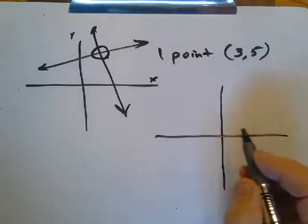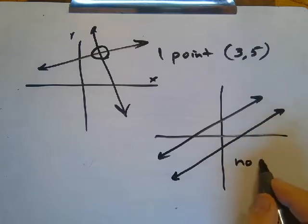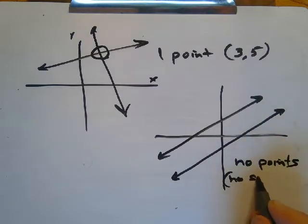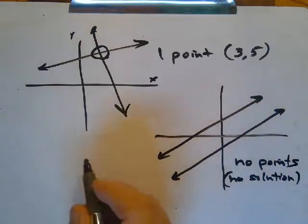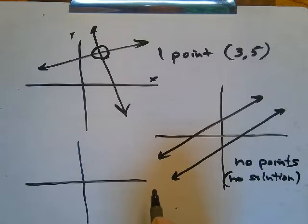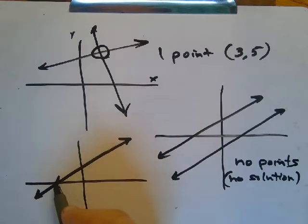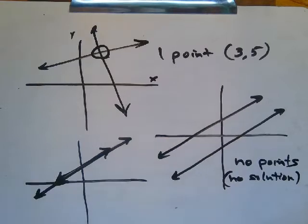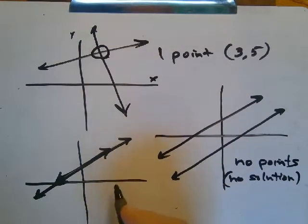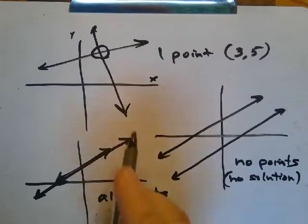Two lines could be parallel, and they intersect in no points — or we might say, no solution, because they're parallel and they're never going to cross at all. The third situation is where two equations don't look like it initially, but if we work with them a little bit, we realize those two different lines are in fact the same line, just one on top of the other. This means they intersect in all points — all real numbers, all points.